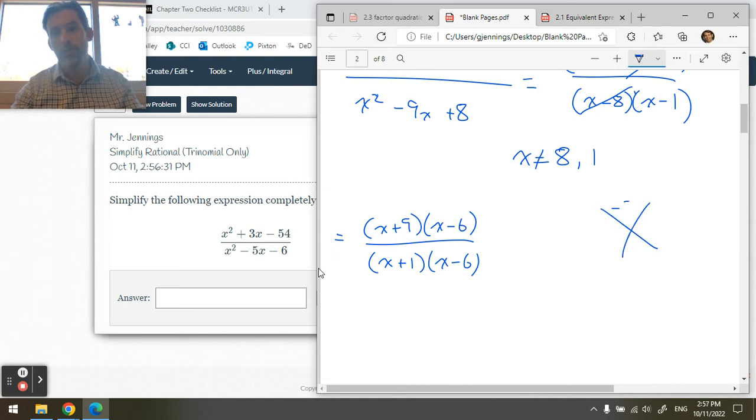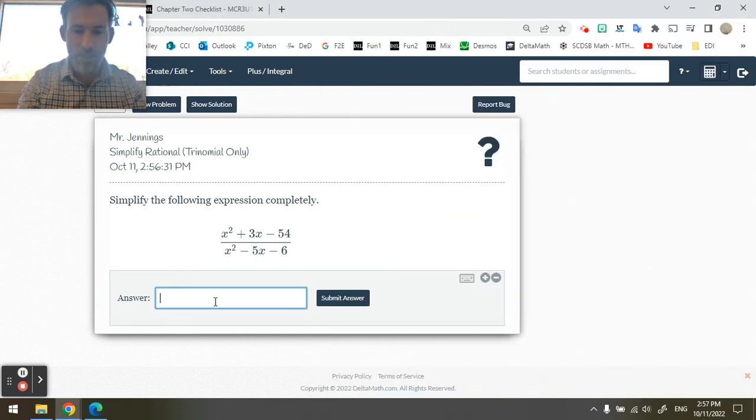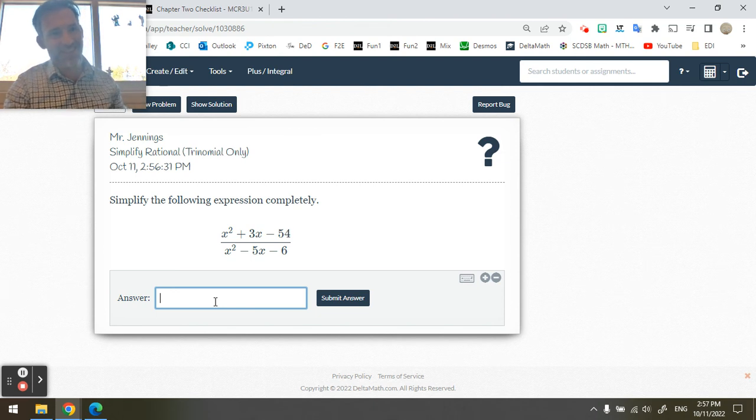There's two X games to play here. Multiply to negative 54 and add to 3 will be for the top one up there, and those numbers are 9 and negative 6. And then the bottom one is multiply to negative 6 and add to negative 5. And those numbers are negative 6 and 1. And so that's what goes in the brackets with the x's. And then I see x minus 6 cancels. So this is x plus 9 in the bracket divided by x plus 1. Hooray!